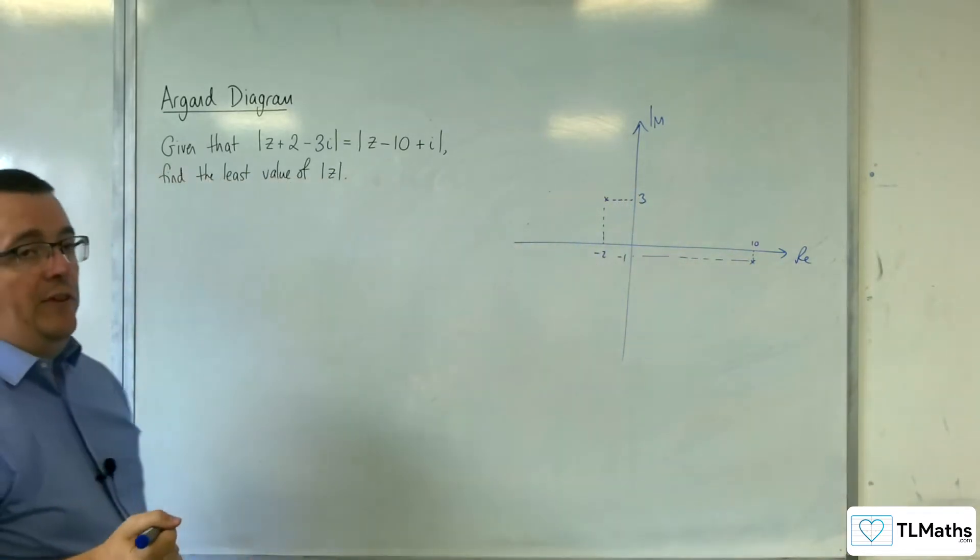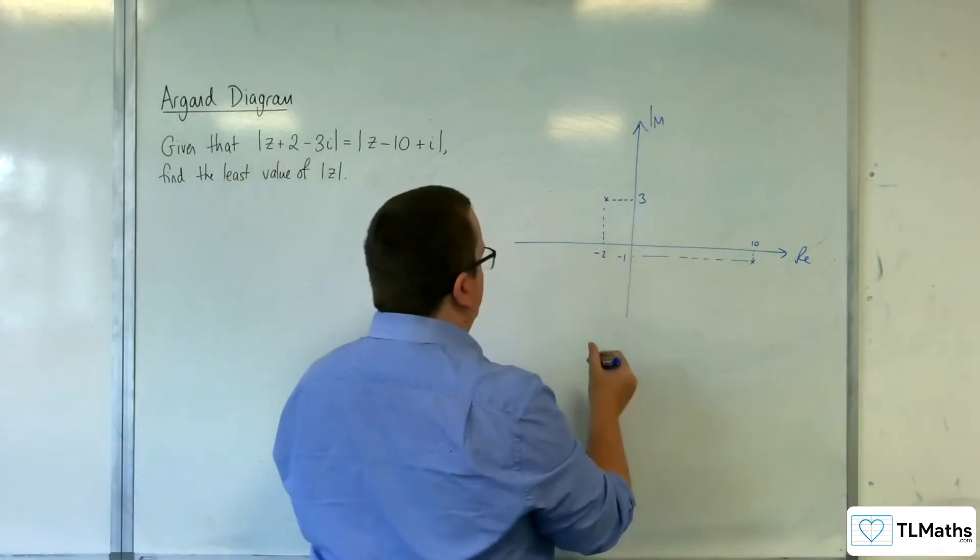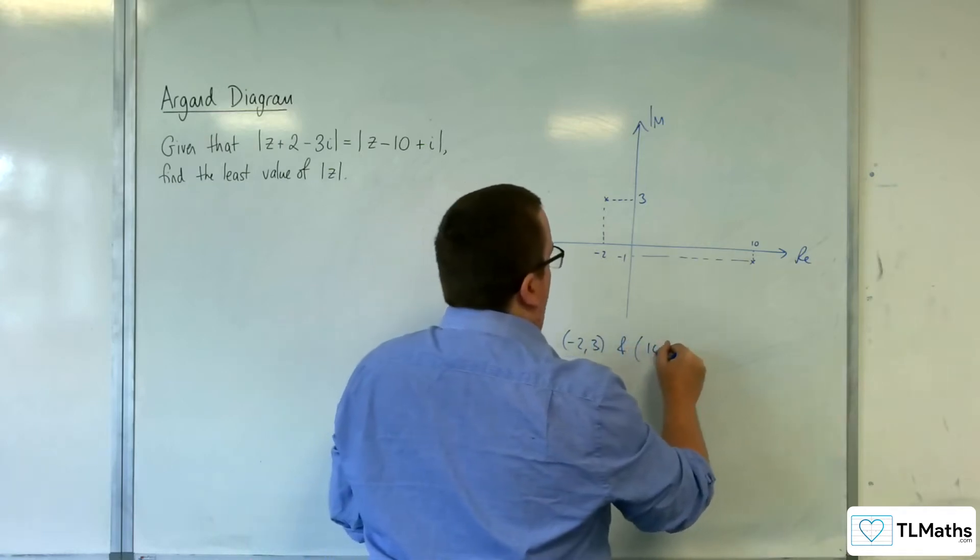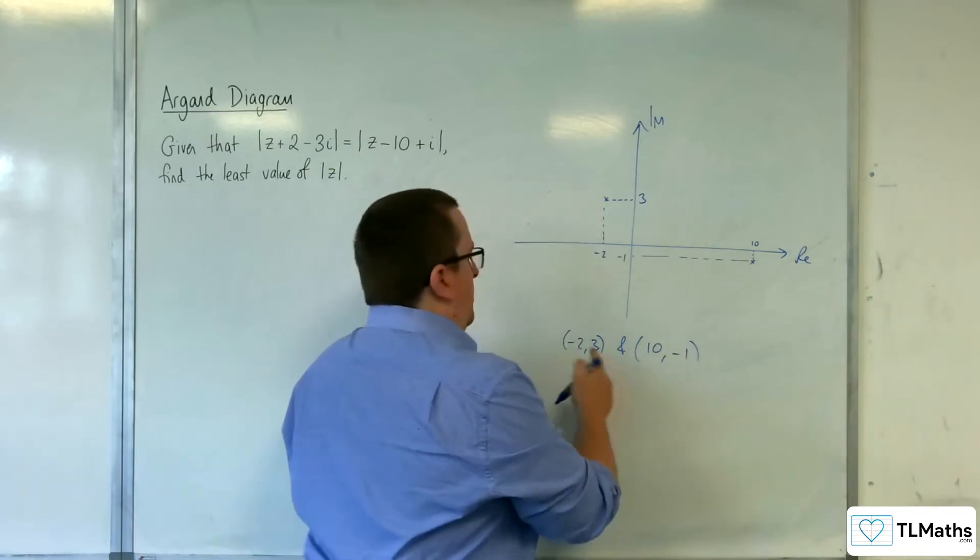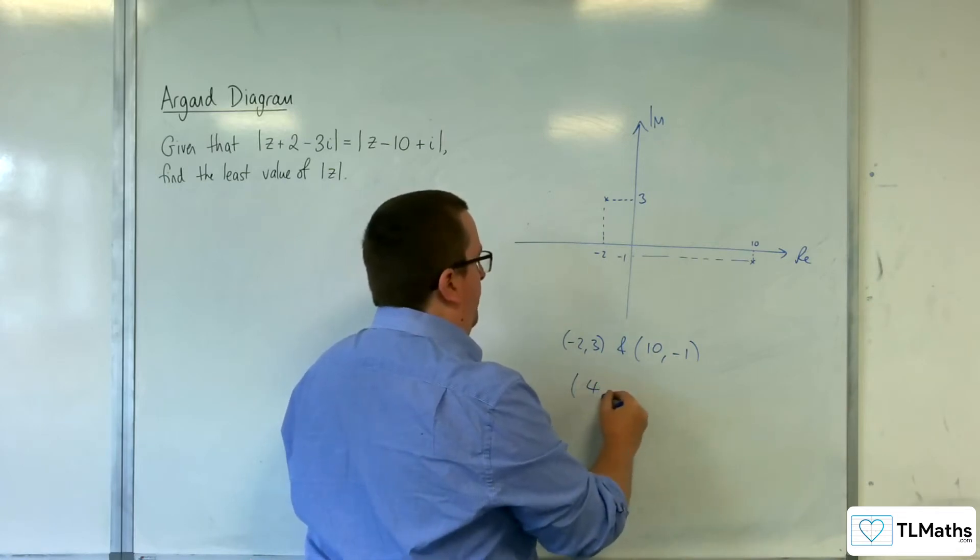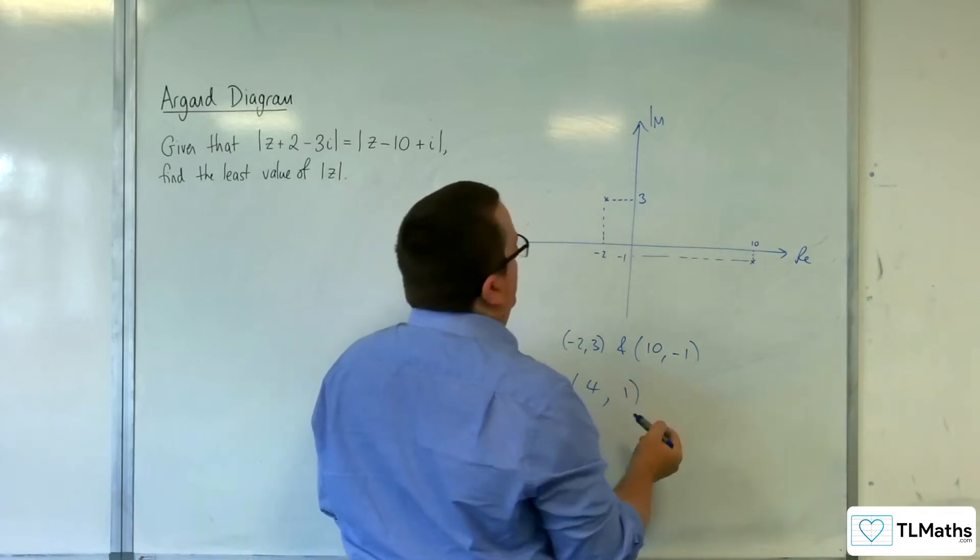We want the perpendicular bisector of those two points. So if we worked out what the midpoint was: we've got minus 2, 3 and we've got 10 minus 1. So we've got minus 2 plus 10 is 8, divide by 2 is 4. 3 plus minus 1 is 2, divide by 2 is 1.